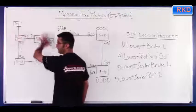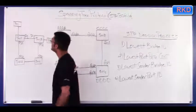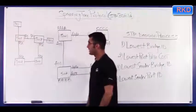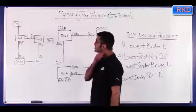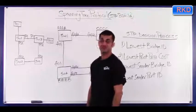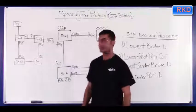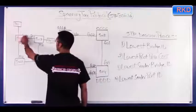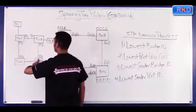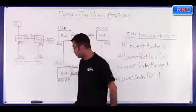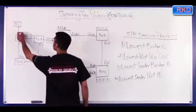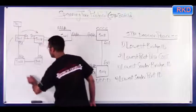If you look at this diagram on the left-hand side, you see that PC1 is connected to switch 1, and PC3 is connected to switch 3. Between switch 1 and switch 3, there are two paths — redundant links are present. One is directly from switch 1 to switch 3, and the other is from switch 1 to switch 2 to switch 4, and back to switch 3. So there are two paths between switch 1 and switch 3.